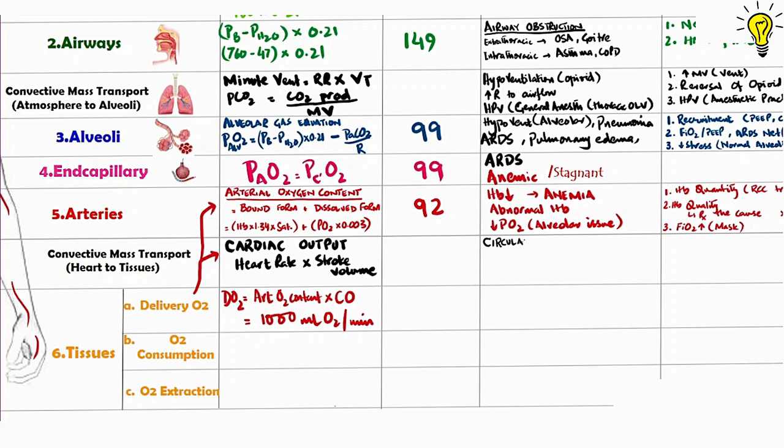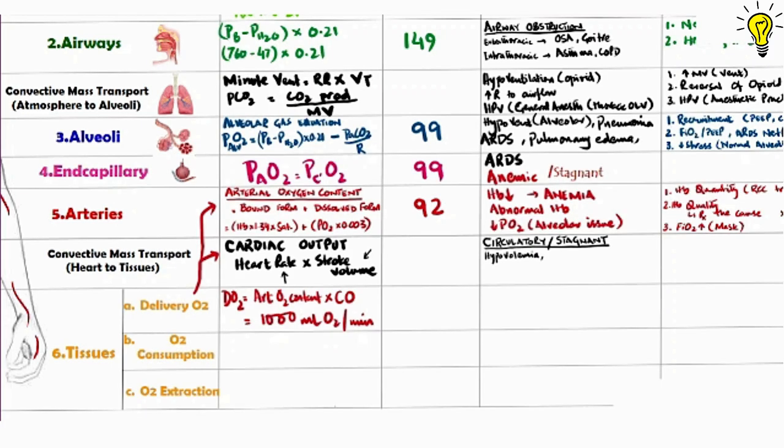What type of hypoxia can occur at this level? Stagnant or circulatory hypoxia. If there is any reduction in heart rate or stroke volume, it would reduce the cardiac output and therefore delivery of oxygen. For example, hypovolemia can cause reduced stroke volume. So now you know why body causes tachycardia in hypovolemia, to try to keep the cardiac output stable, to try and keep the delivery of oxygen going.